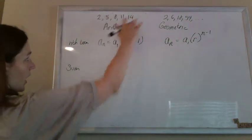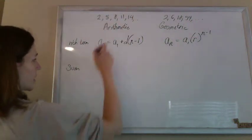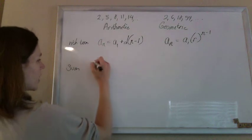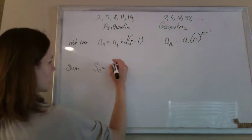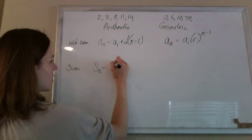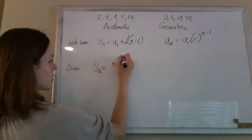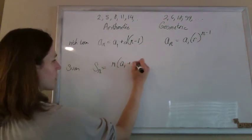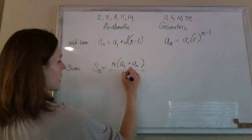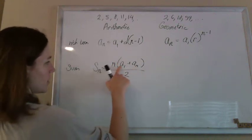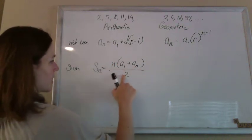You could also add all of these guys up and get a formula for the sum of all of them. So you can get the sum of any terms by taking, for an arithmetic, take the number of terms times the first term plus the last term divided by 2. So that's n times a sub 1 plus a sub n divided by 2.